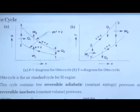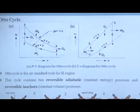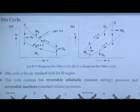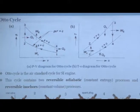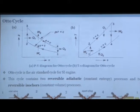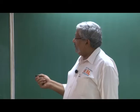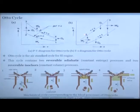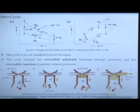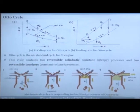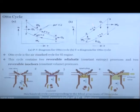In the actual SI engine cycle, it is the fuel's chemical energy that is released, causing temperature to rise. Process 2 to 3 is constant volume heat addition — volume remains constant in both the P-V and T-S representations. On the T-S diagram, when heat is released, both pressure and entropy increase.